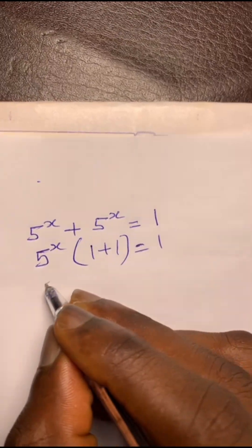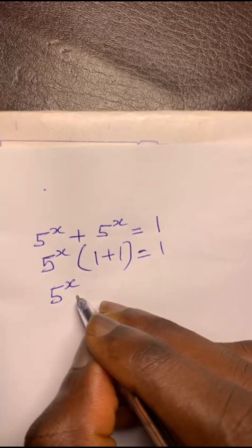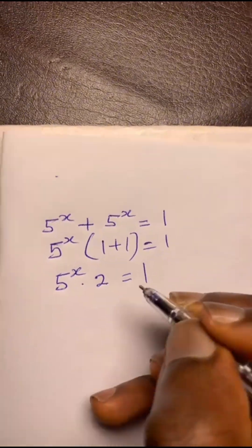Equals 1. So now we got 5 to the power of x times, 1 plus 1 is 2, equals 1.